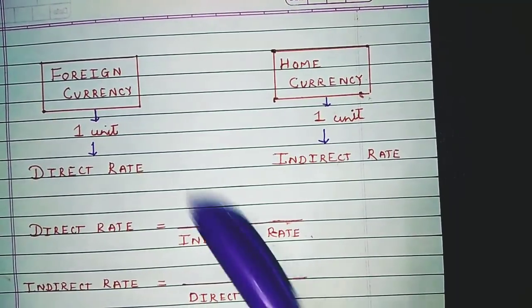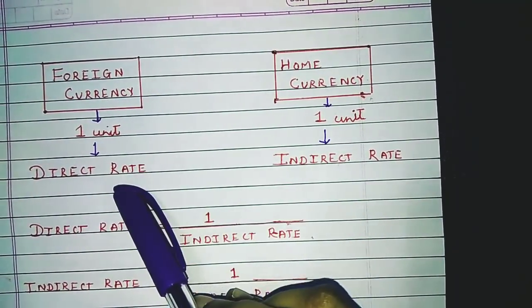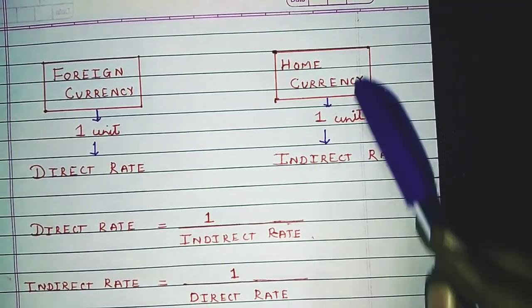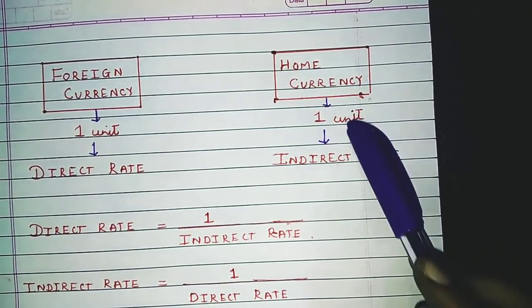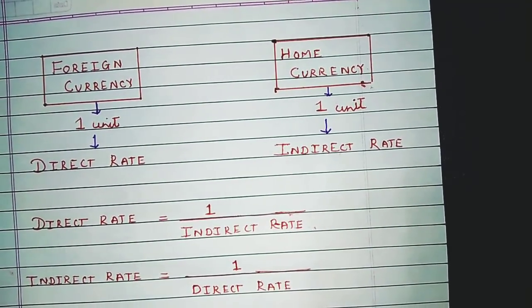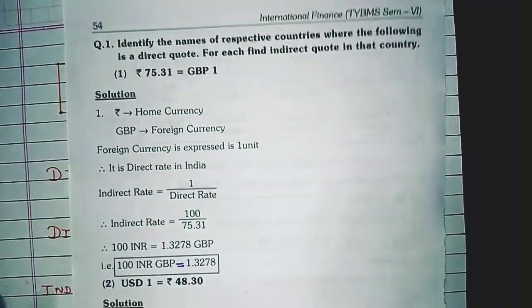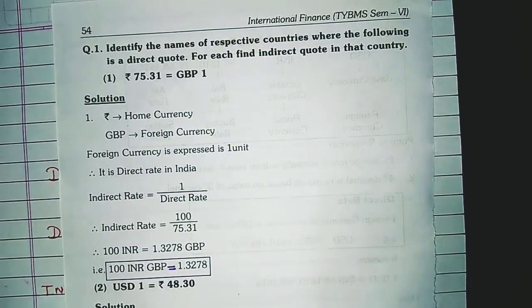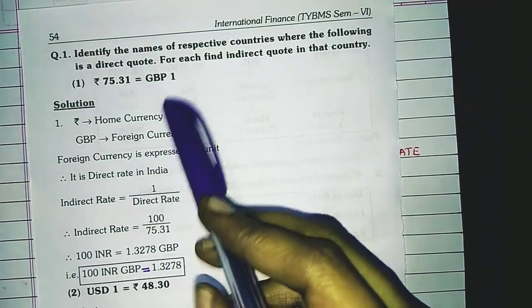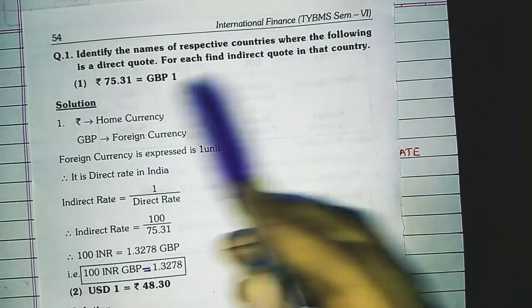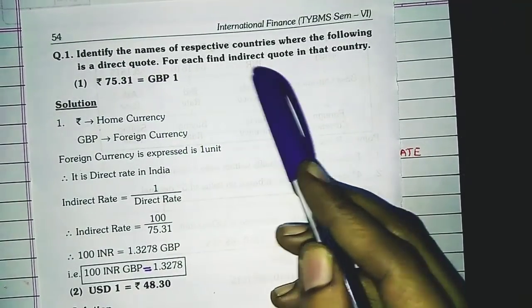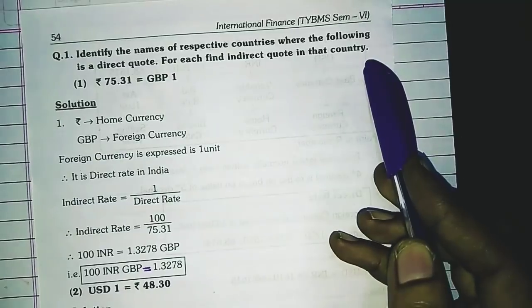To revise: whenever you are expressing foreign currency in one unit, that is the direct rate; whenever you are expressing home currency in one unit, that is the indirect rate. Now we are going to start with the numericals. The first question asks you to identify the names of the respective countries where the following is a direct quote, and for each find the indirect quote in that country.